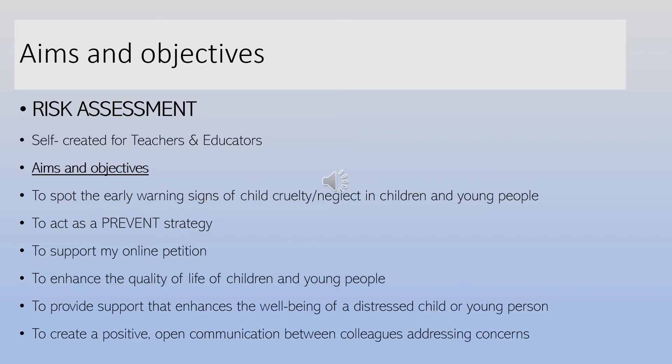The aims and objectives I have for this — for the outcome of this — is to make educators feel much more equipped to deal with reporting incidents and important things that they need to be prepared for. I think Safe Garden training should act as a prevent strategy. I also want to support my online petition for child equality and to help prevent a quality of life for young people and children.